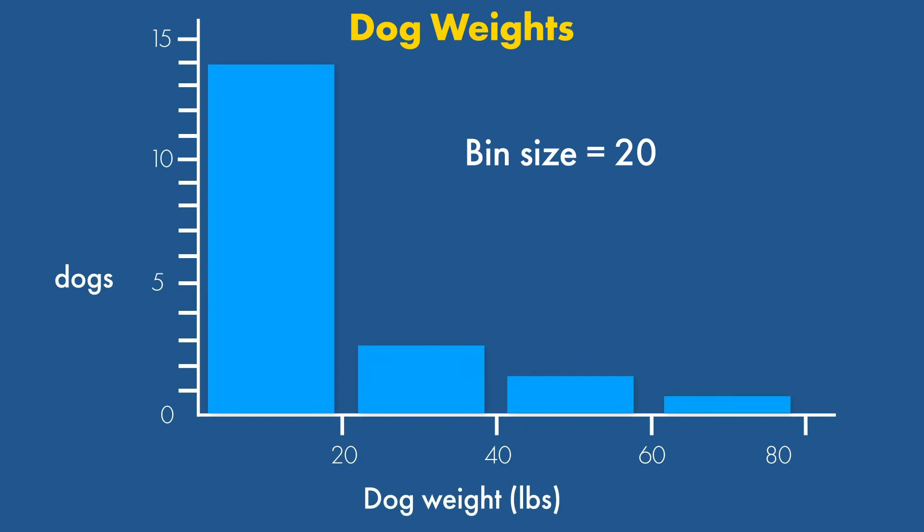Let's try a larger bin size of 20 pounds. This conveys the main trend, which is that there are many more lighter-weight dogs, but it doesn't allow us to differentiate between 0 and 10-pound dogs and 10 and 20-pound dogs like we could before.